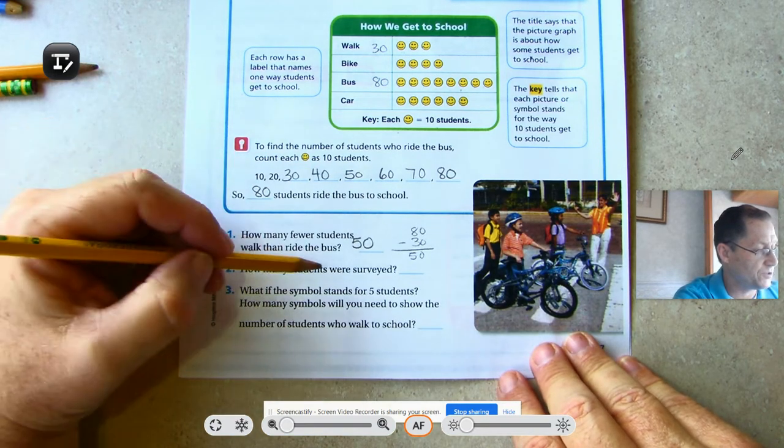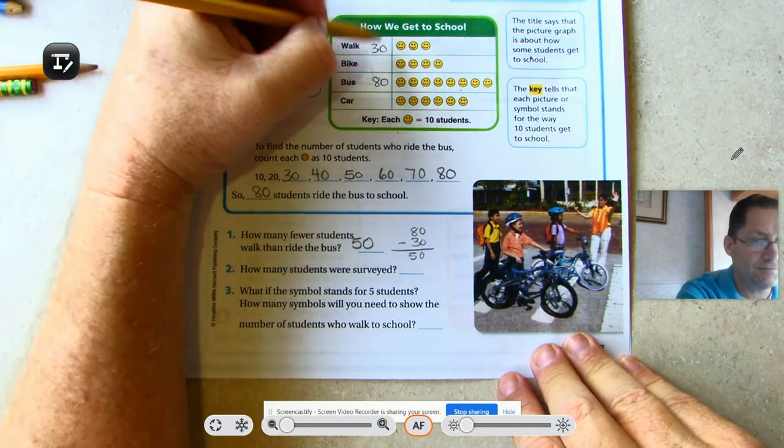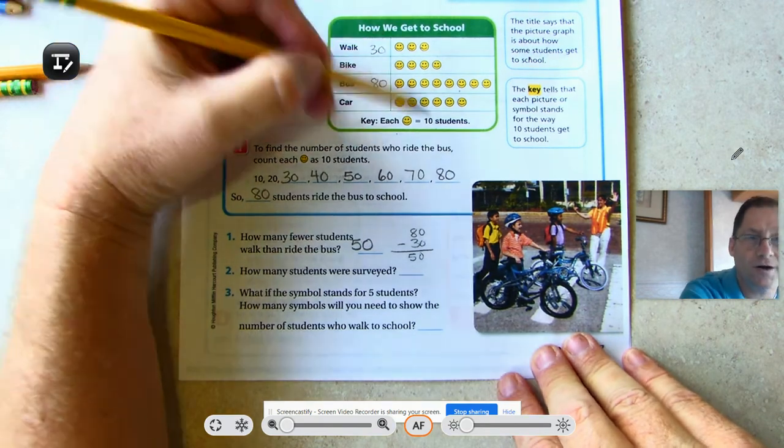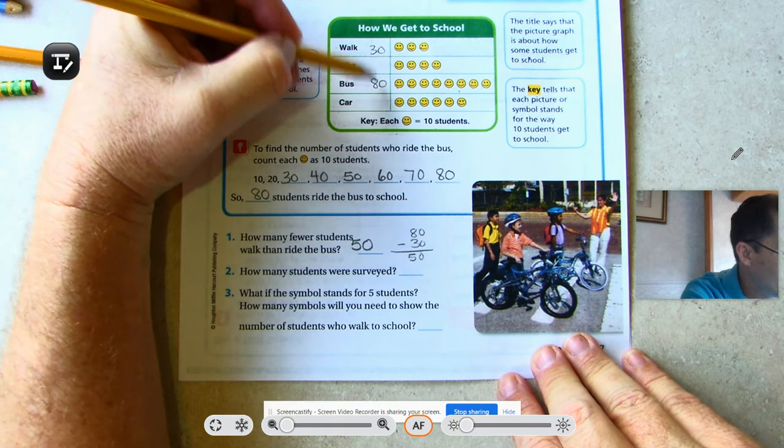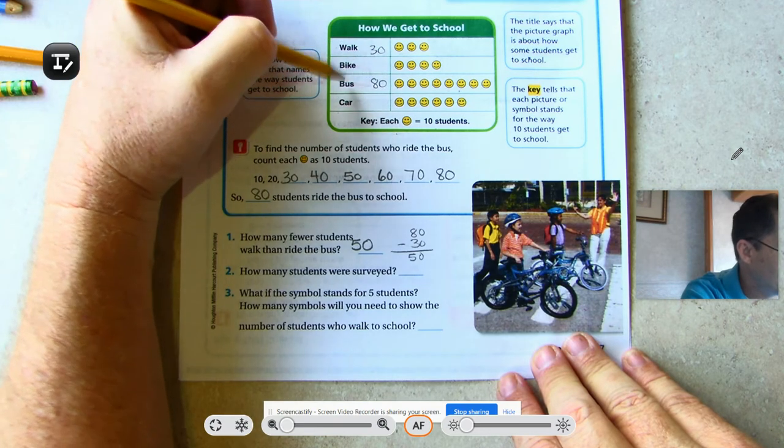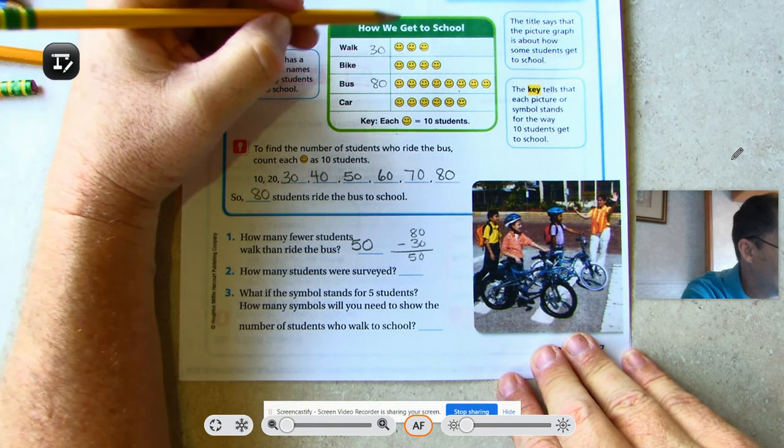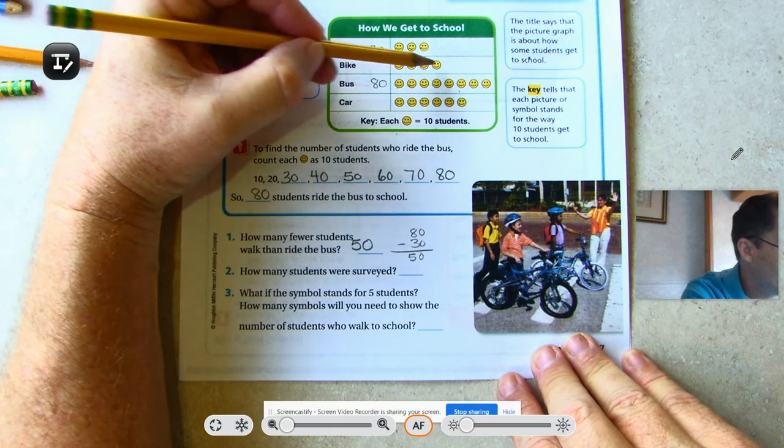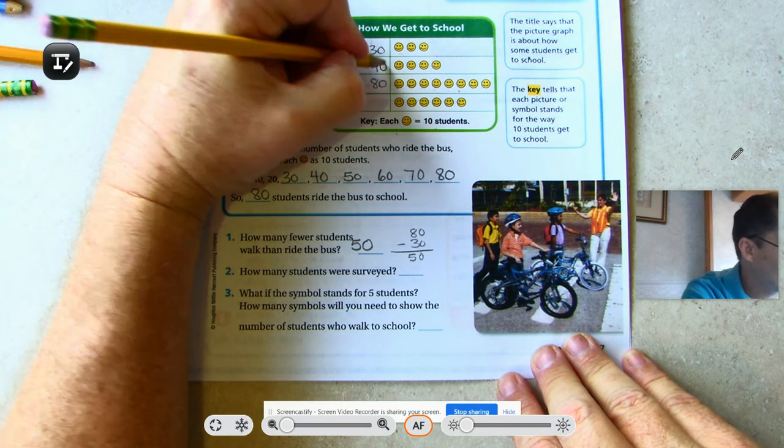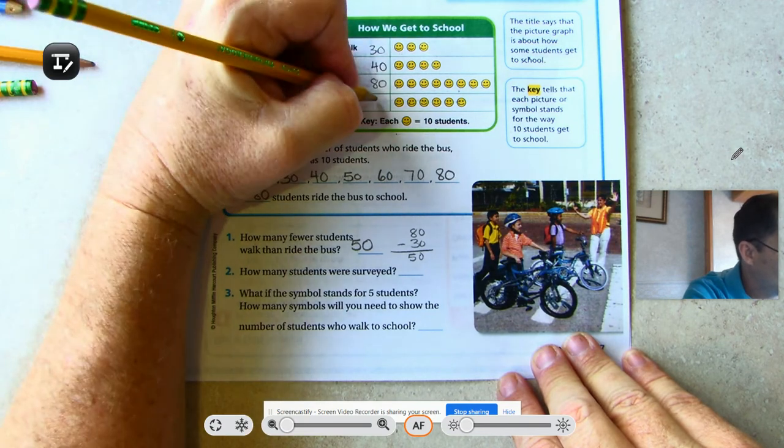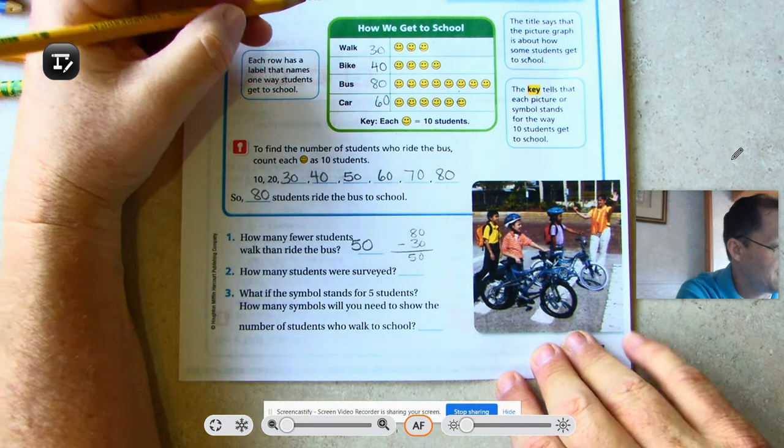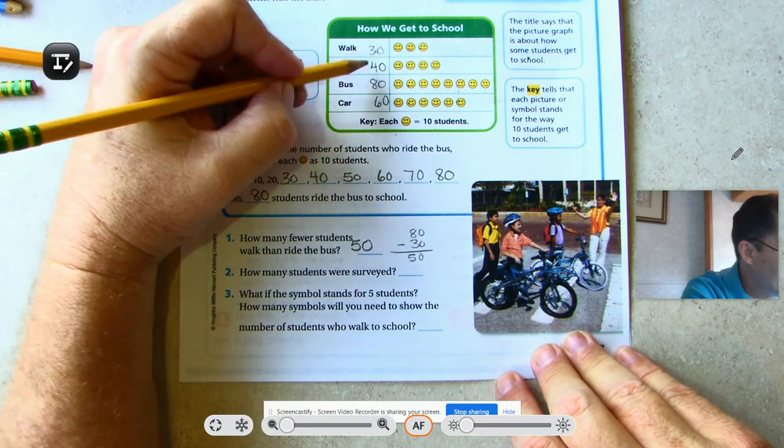How many students were surveyed? That basically means add up all the happy faces. Or we can write how many they are for each column, for each type, and then add them all up. 10, 20, 30, 40 people ride a bike. 10, 20, 30, 40, 50, 60 people driving a car.